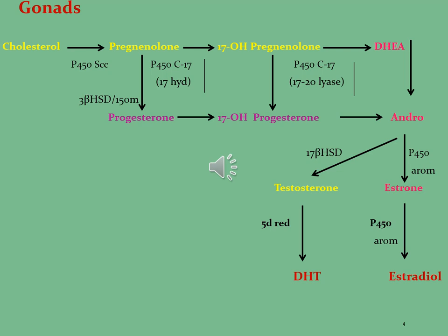Testosterone and estrone are further changed into DHT, that is dihydrotestosterone, by the effect of enzyme 5-alpha reductase, and estrone is changed into estradiol by the effect of enzyme P450 aromatase. This is the general procedure for the biosynthesis of different kinds of hormones and the effect of different kinds of enzymes upon it.